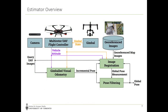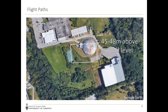Here is an overview of our estimator. We have three major blocks shown in green: gimbaled visual geometry, image registration, and pose filtering. Before we perform any estimation, we first need to generate the database of Google Earth images, and before we do that, we first need to plan our flight path.